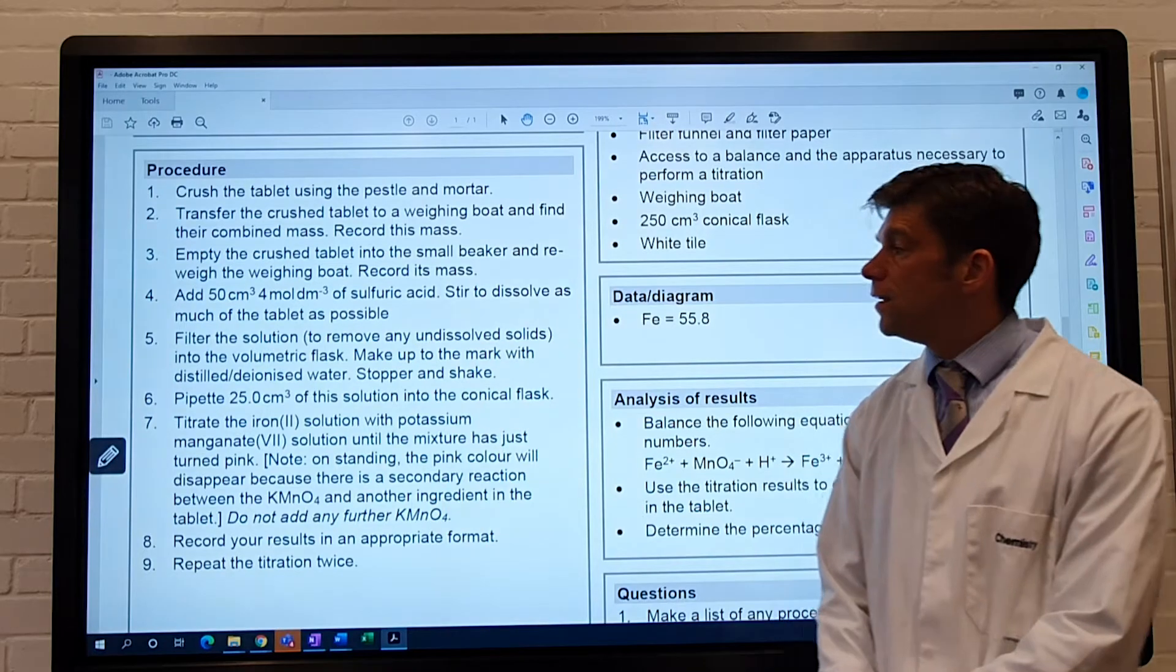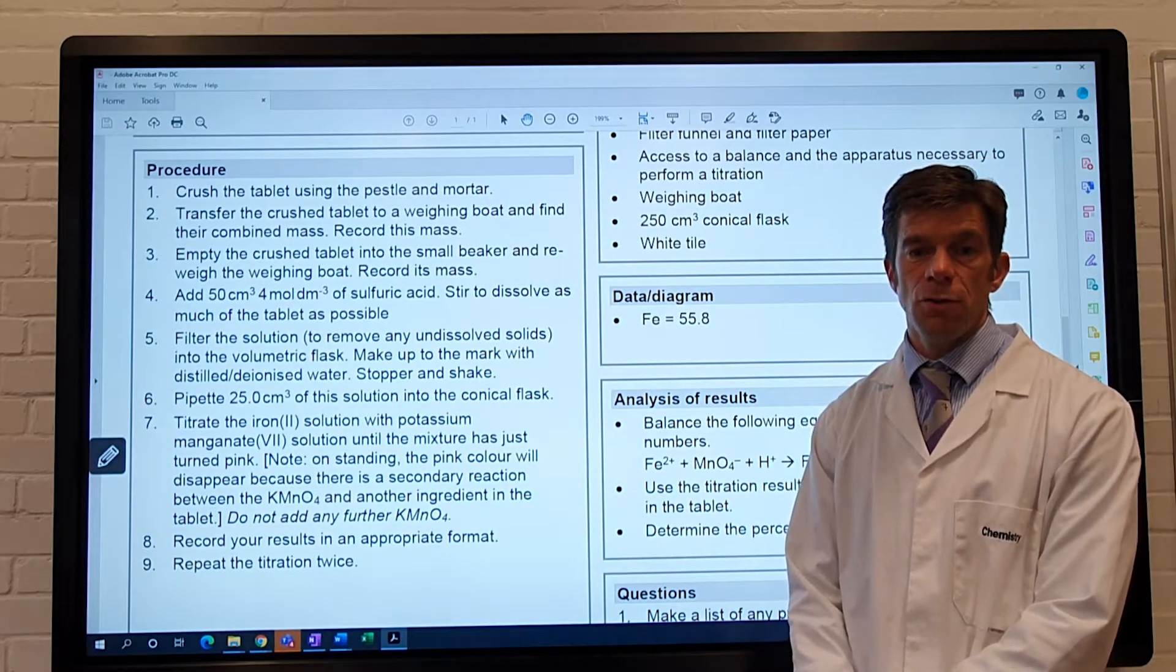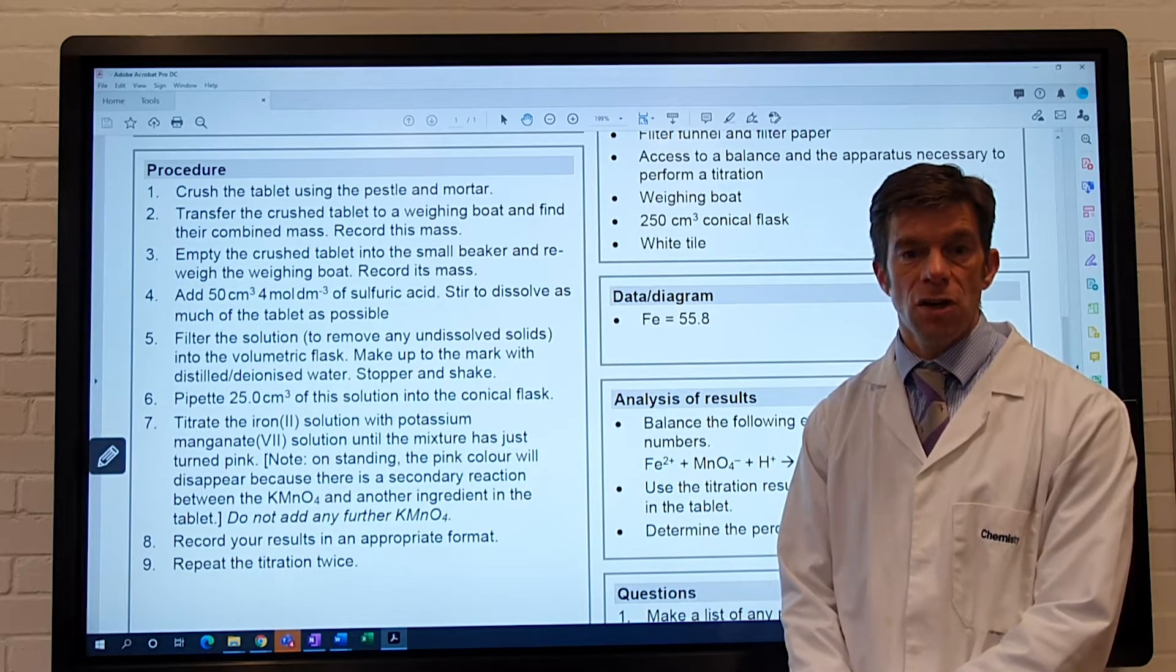Step 7, titrate the iron 2 solution with potassium manganate solution until the mixture has just turned pink.